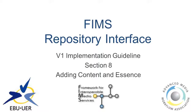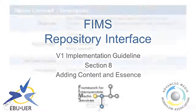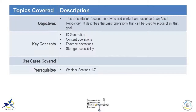This is Roger Saccolato, and I'll be talking about the FIMS Repository Interface Implementation Guideline, Section 8: Adding Content and Essence. Today we're going to cover the objectives of adding content and essence to an asset repository. This webinar will describe the basic operations that can be used to accomplish that goal. Key concepts include ID generation, content operations, essence operations, and storage accessibility.